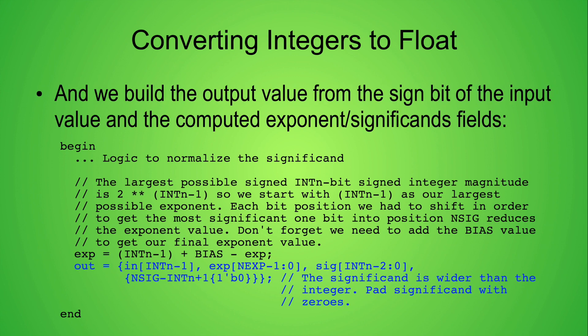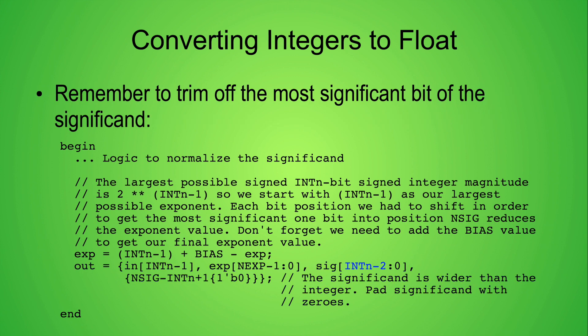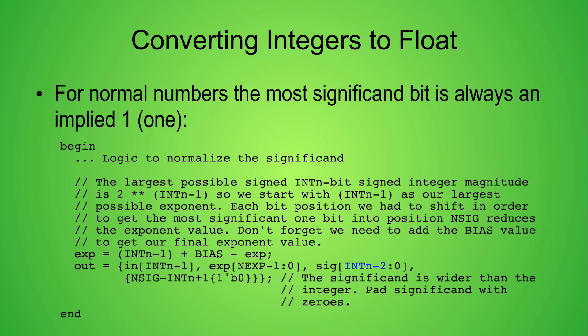To get our final output value, we concatenate the sign bit from the integer input value with the adjusted exponent value and the SIG field. Remember to strip the leading 1 off of the SIG field. The leading 1 digit is implied for normal numbers. And finally, remember to zero-pad the remaining bits of the SIG field.